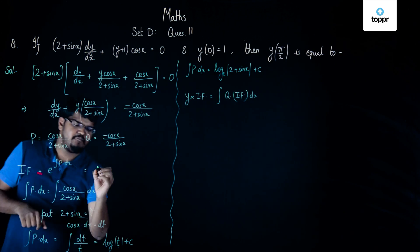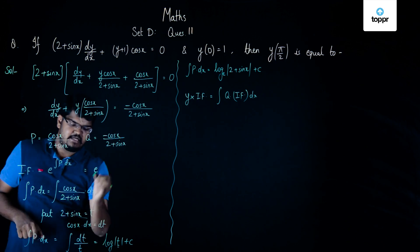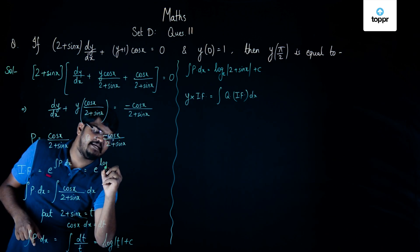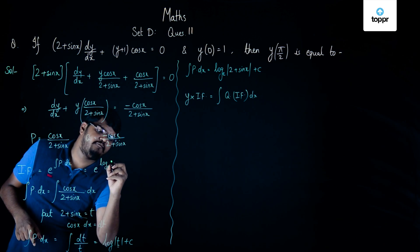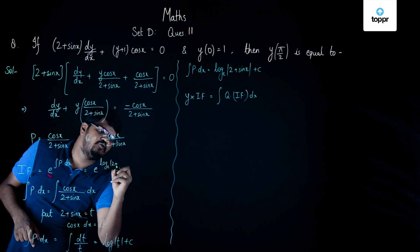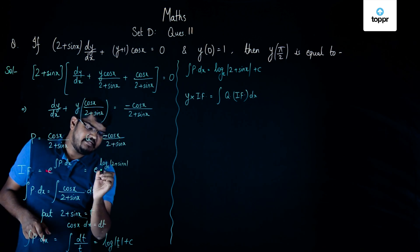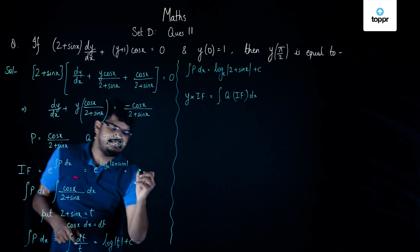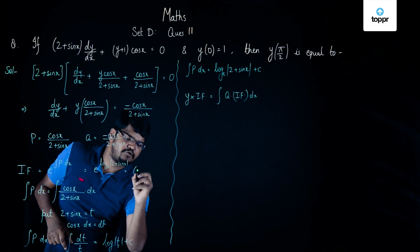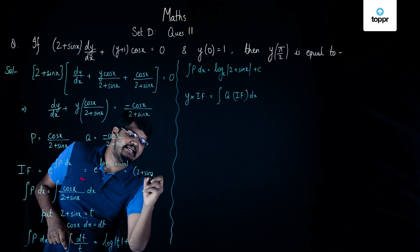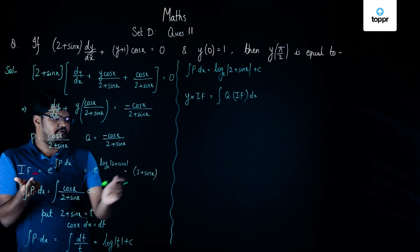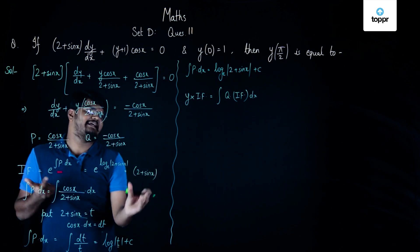The integrating factor is e raised to the power log_e(2 + sin x), which gives us the final value 2 + sin x. So our integrating factor is simply (2 + sin x) itself.